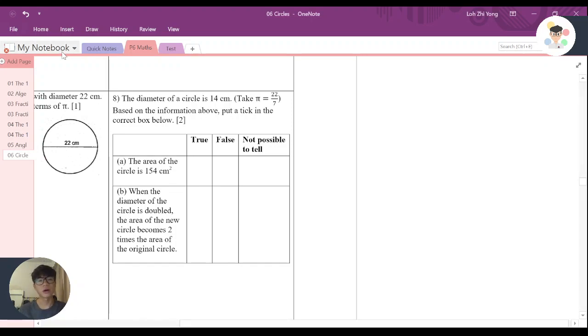It says that the diameter of the circle is 14 cm. So basically, I know that this is a circle, this is the center, and the diameter is a line through like this, and the line is 14 cm.